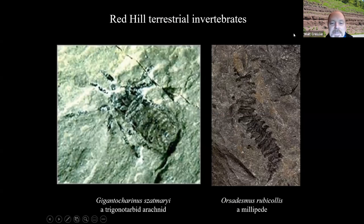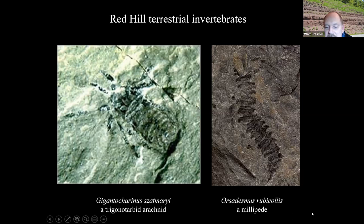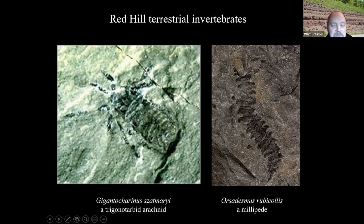Now for other crusty characters from north central Pennsylvania: here are some terrestrial invertebrates that were discovered at Red Hill, including a millipede on the right — pretty small compared to the ones from the Pennsylvanian period, which got really huge because of the high oxygen levels. On the left is a trigonotarbid arachnid — an eight-legged spider relative but with more segments, so a more basal form. This is the one named after Del Zatzmari: Giganticorhinus zatzmarii.